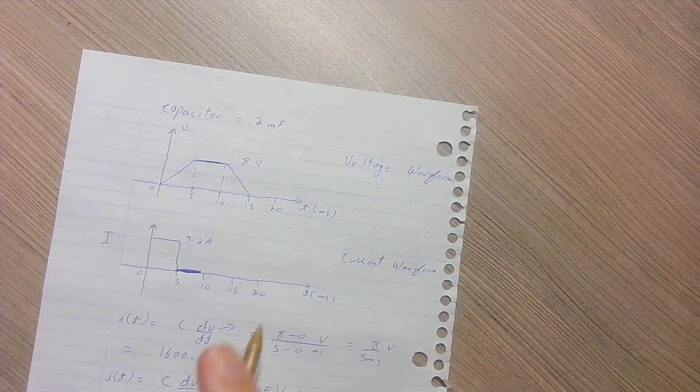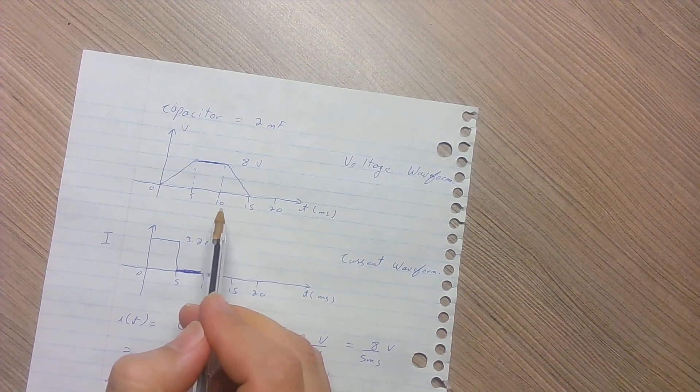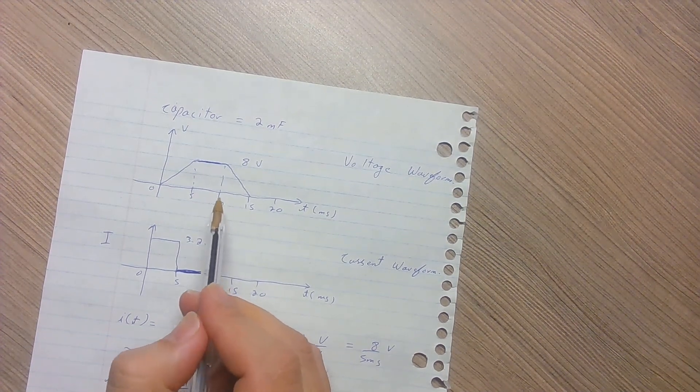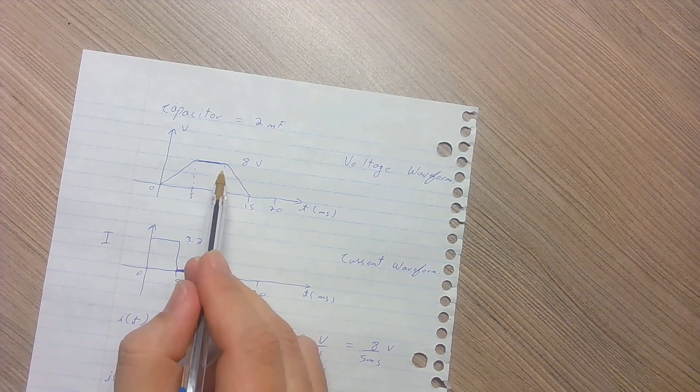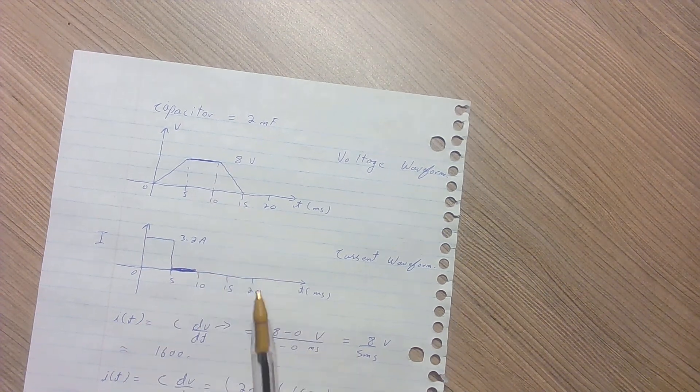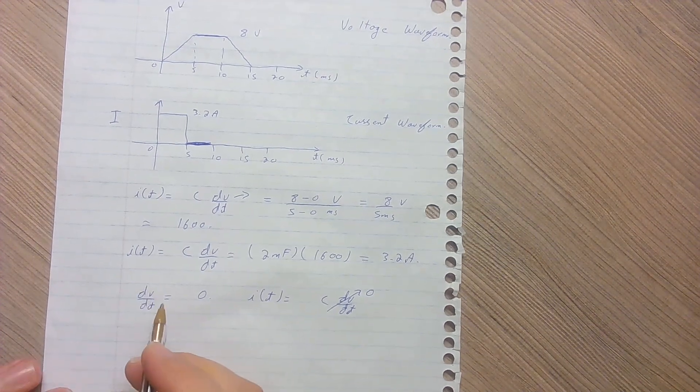Similarly, for calculating the current magnitude for the voltage from 10 milliseconds to 15 milliseconds, where it changes from 8 volts to 0 volts, we can use the first equation again.